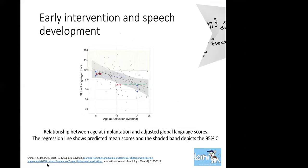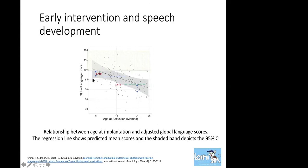Longitudinal studies from Teresa Ching in Australia — I believe they did the most comprehensive longitudinal studies — clearly demonstrated that the most predictive value for the best speech perception outcome is the age at which the cochlear implant was activated. If cochlear implant electrodes were activated at six months of age competing against a group activated at 12 months and 24 months, there is a 0.7 standard deviation difference, and this is a big difference.